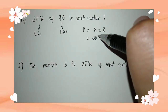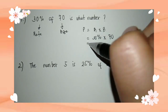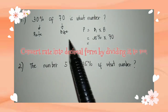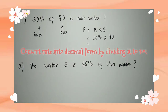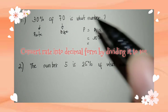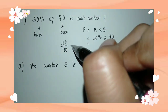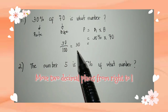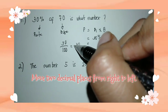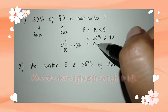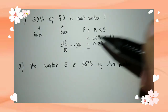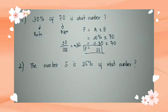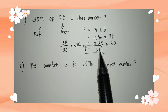With the triangle PRB, P is what we're looking for, so percentage equals rate times base. The rate is 30 percent and the base is 70. First, convert 30 percent by dividing by 100: move the decimal point two places to the left, giving us 0.30. Then 0.30 times 70 equals 21. So the percentage is 21 — meaning 30 percent of 70 is 21.